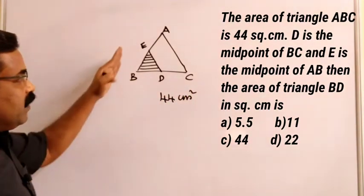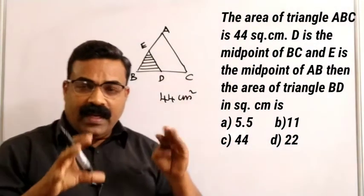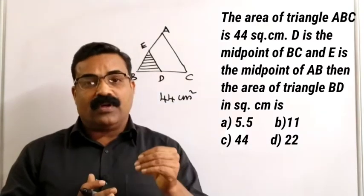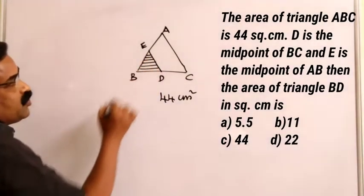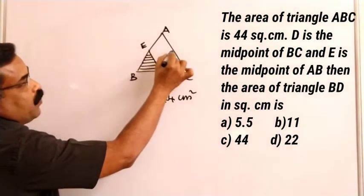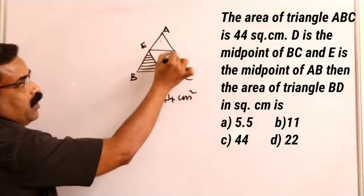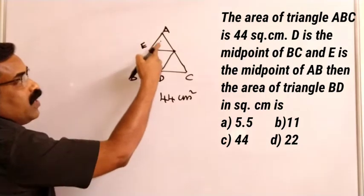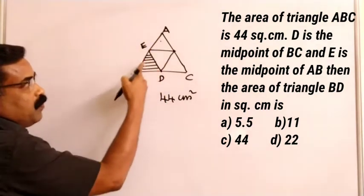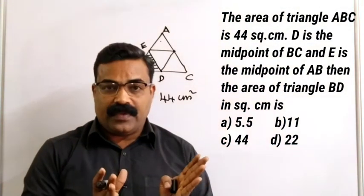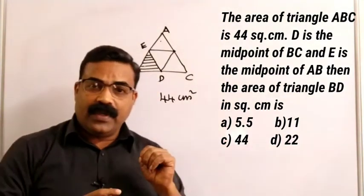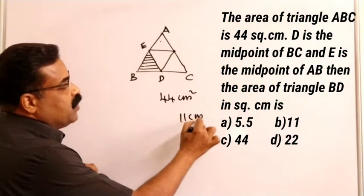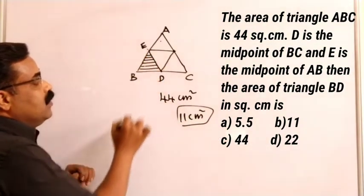The concept here is: whenever we join the midpoints of the sides, the triangle formed will be one-fourth of the area of the total triangle. The bigger triangle ABC is divided into four equal parts. So one part will be one-fourth of the total triangle. One-fourth of 44 is 11. So 11 cm² is the area of triangle BDE.